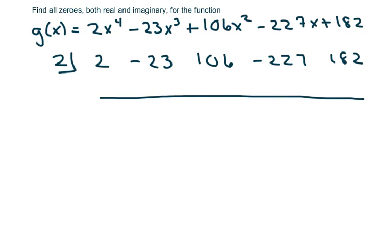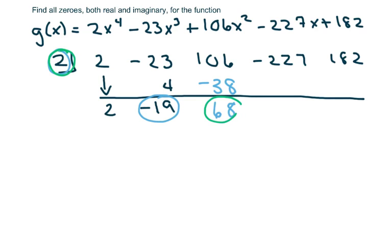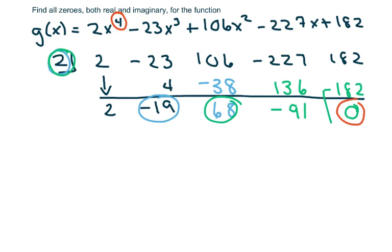I bring down the 2, multiply and add, multiply and add. I get 68, multiply and add get 136, multiply get negative 182, and I get zero. Since zero is my remainder, that means 2 is a zero, which we already knew from the calculator. My degree is four, so I go down one degree — this gives me 2x cubed minus 19x squared plus 68x minus 91.